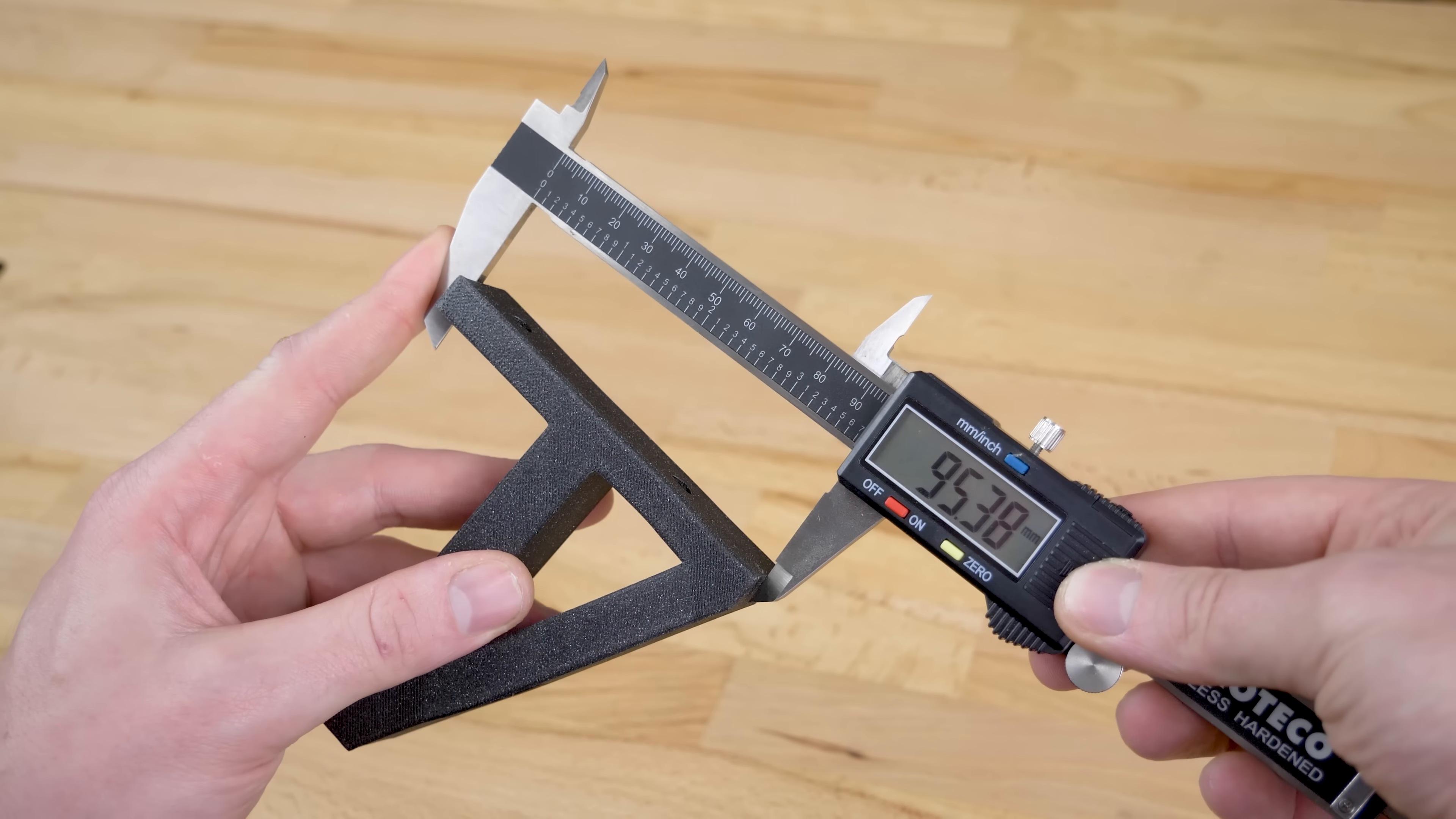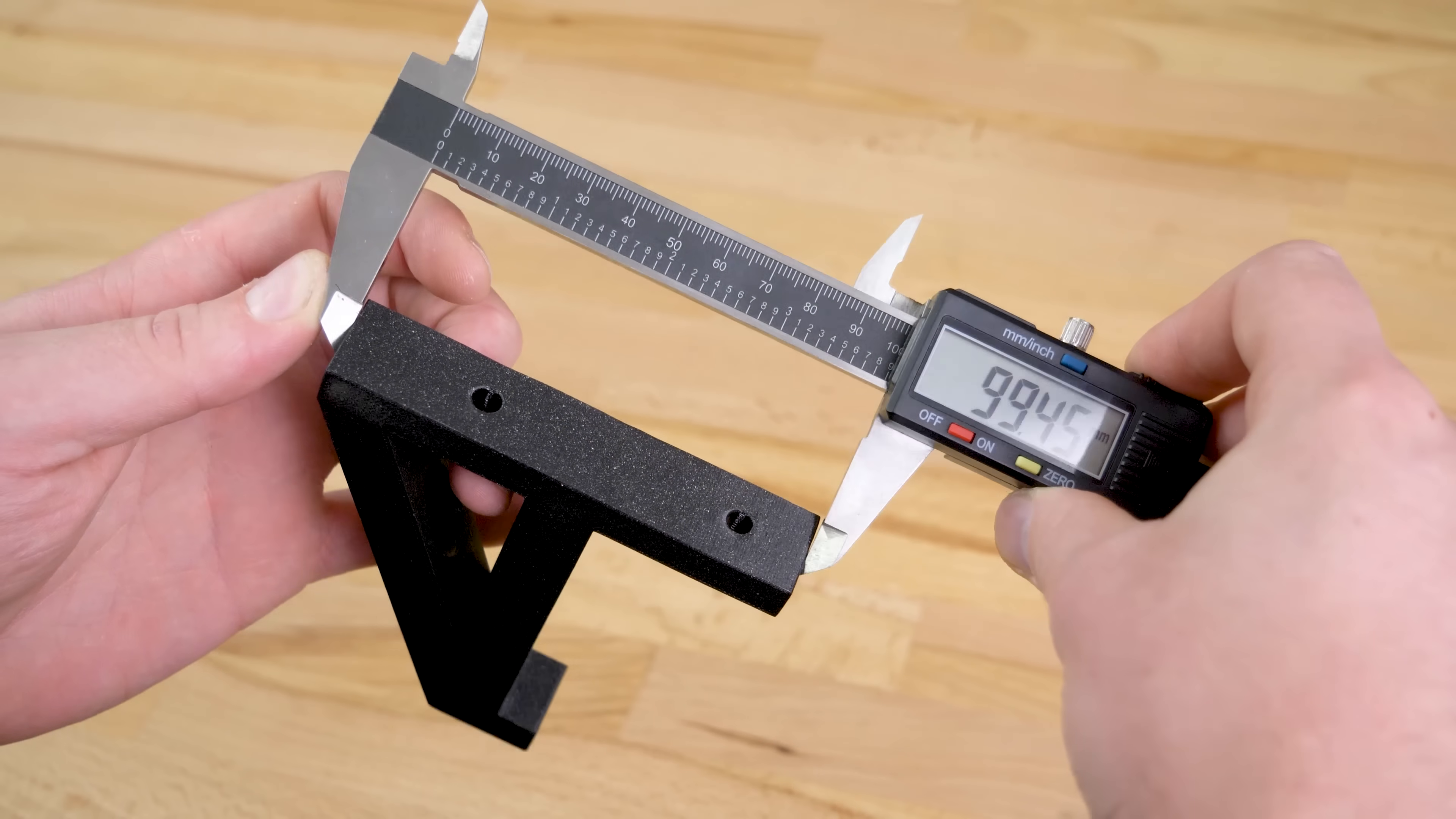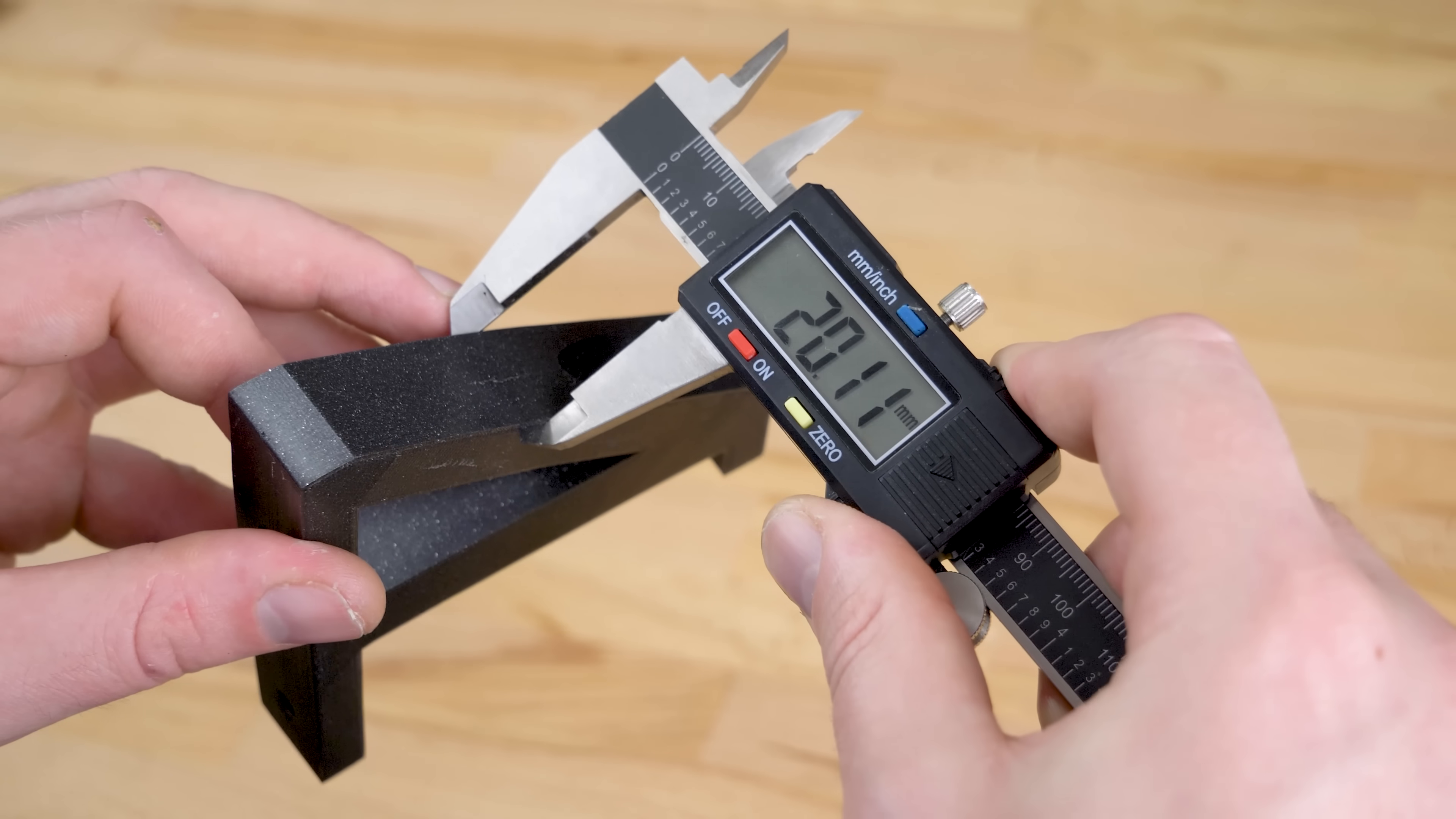Annealed parts have a tendency to shrink, so we measured the object and modified the scale in Prusa Slicer. This time, the annealed print is much closer to required dimensions and it's considerably stronger than the original model. If you already have experience with annealing 3D printed models, let us know in the comments. And as always, happy printing!